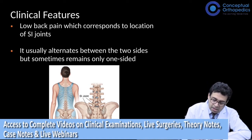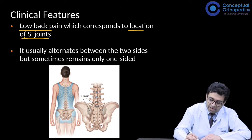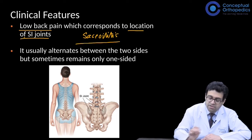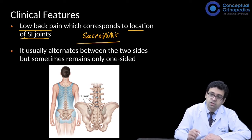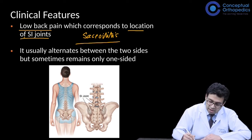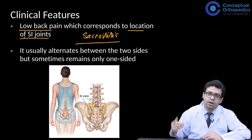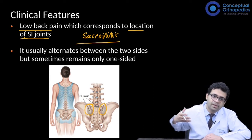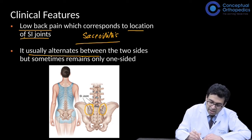The first distinguishing feature is the location. The low back pain in ankylosing spondylitis corresponds to the location of the SI joints. This is because sacroiliitis — inflammation of the sacroiliac joint — is one of the first or early manifestations of ankylosing spondylitis. The pain happens at that site where the SI joint is present, which is also the same area as the back pocket of the trousers, and the patient will point there.